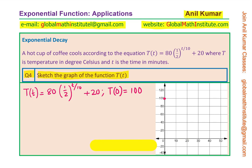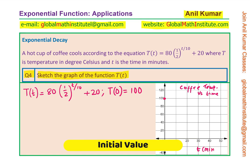You can write the title as coffee temperature versus time, where time t is in minutes on the horizontal axis and temperature capital T is in degrees Celsius on the vertical axis. Label the axes clearly.